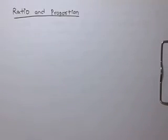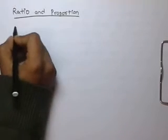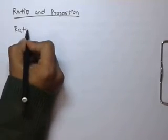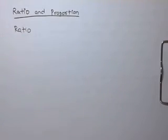In this video we will learn about ratio and proportion. First we will go through the ratio. A ratio is a comparison of two similar quantities. We can obtain a ratio by dividing one quantity from another.